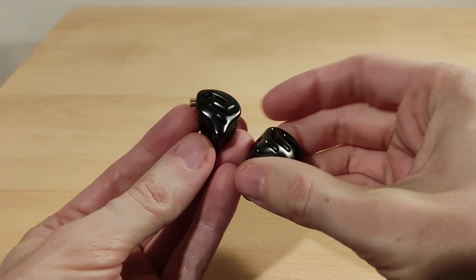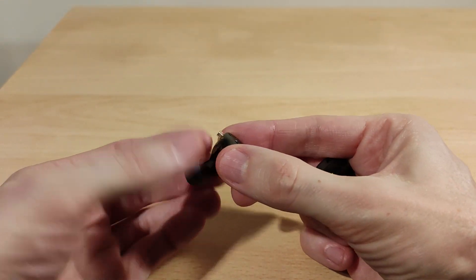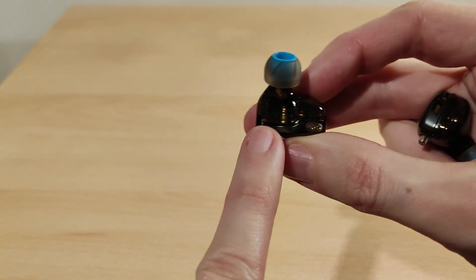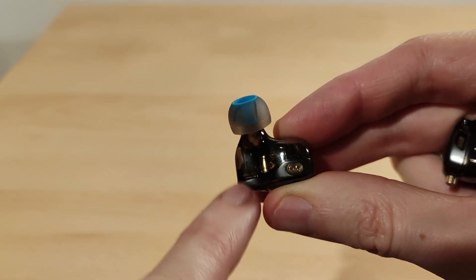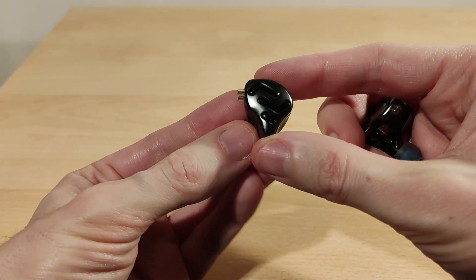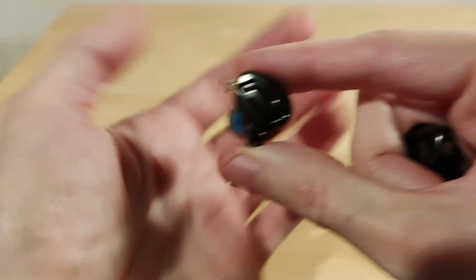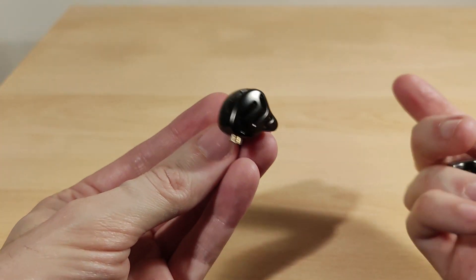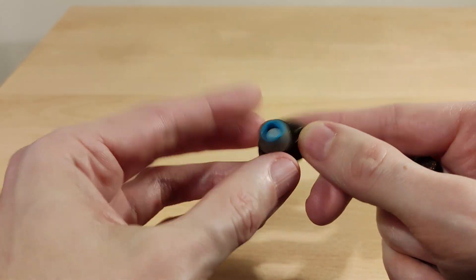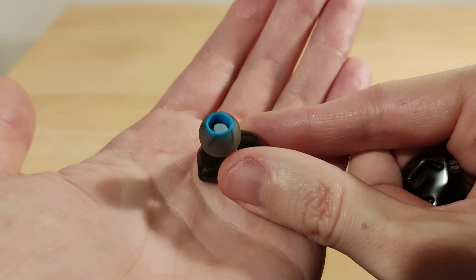Welcome to my review section of the KZ ZNA, a hybrid with one DD and one balanced armature. You can see the BA just there. Build seems pretty fine. All this stuff is just for styling. There's a vent there but it doesn't really seem to do much. Comes with these different tips, so normally when you go wide bore...